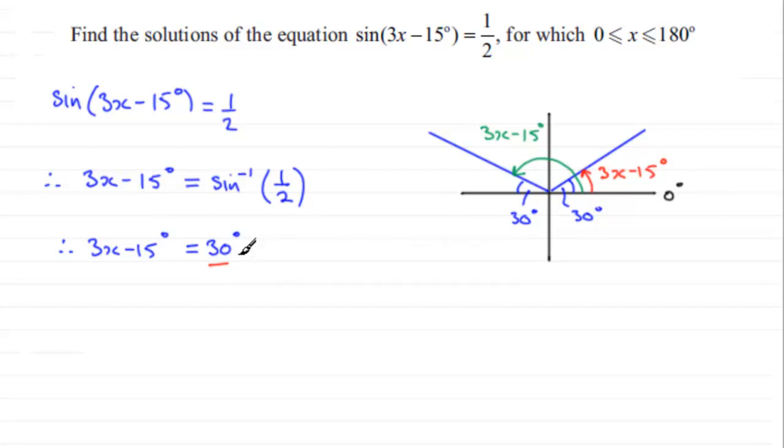The next one, the green solution, is going to be 180° minus this 30°. So in other words, it's going to be 150°. So that corresponds with the green solution here.